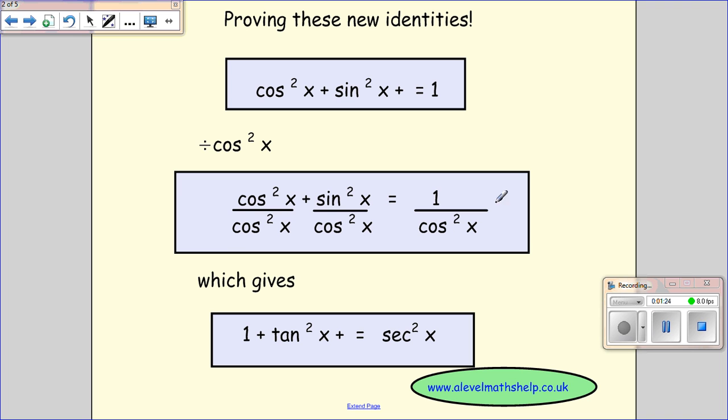See, we've done that here. And remember, you must do each term. And then we cancel there. So cos squared over cos squared is going to be 1. Sin squared x over cos squared x gives you tan squared x. And 1 over cos squared x gives you sec squared x.